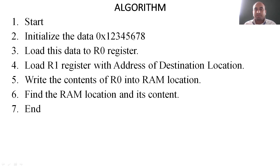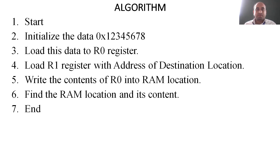This data will first be loaded into the R0 register. We will take another register, R1, and load the address of the destination RAM location into R1. Next, we need to write the contents of R0 into the RAM location. Then, whatever data we have written to the RAM location, we have to verify whether that data is stored at the prescribed RAM location, and end the program.